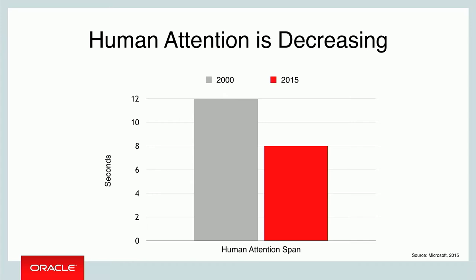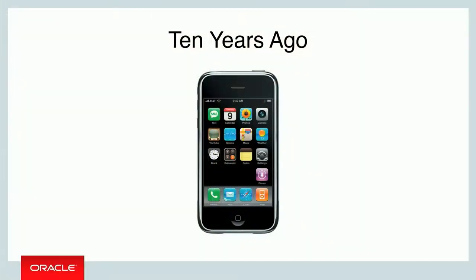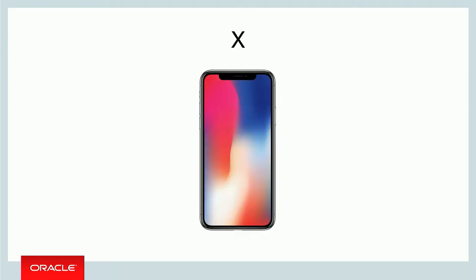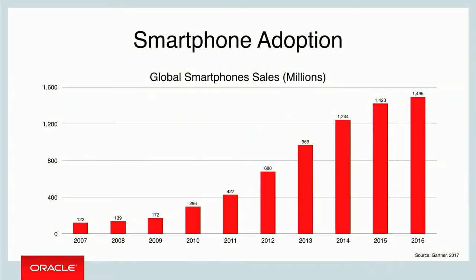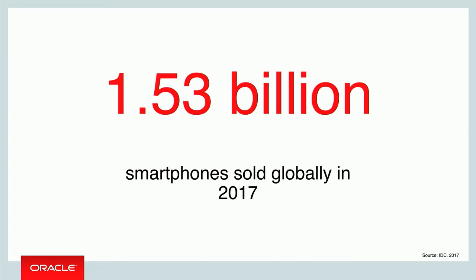That correlates pretty much to the rise of mobile — the rise of smartphones. A lot has happened in the last 10 years, going from the original iPhone to really cool devices that you can do tons of fun stuff with. As human attention is decreasing, smartphone sales are increasing. In fact, the 2017 numbers show 1.53 billion devices sold globally.